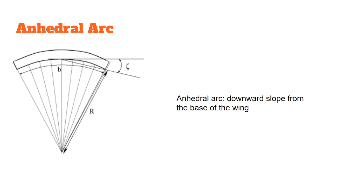The anhedral arc refers to the angle from the base of the parachute to the wingtips. Anhedral means there's going to be a downward slope from the base of the wing. Depending on the parachute, that angle will vary.